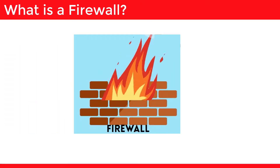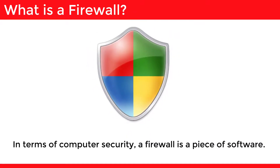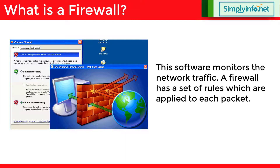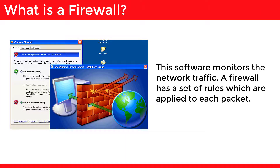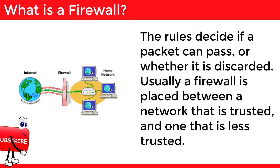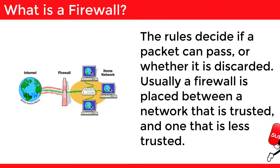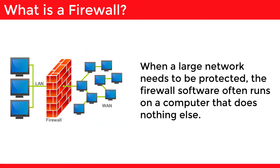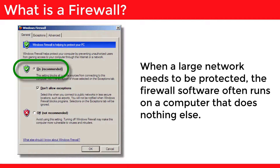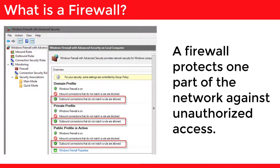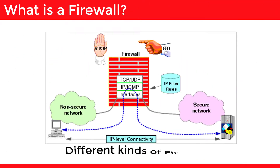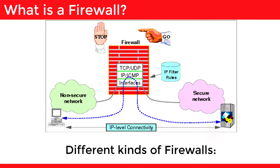What is a firewall? In terms of computer security, a firewall is a piece of software. This software monitors the network traffic. A firewall has a set of rules which are applied to each packet. The rules decide if a packet can pass or whether it is discarded. Usually a firewall is placed between a network that is trusted and one that is less trusted. When a large network needs to be protected, the firewall software often runs on a computer that does nothing else. A firewall protects one part of the network against unauthorized access.